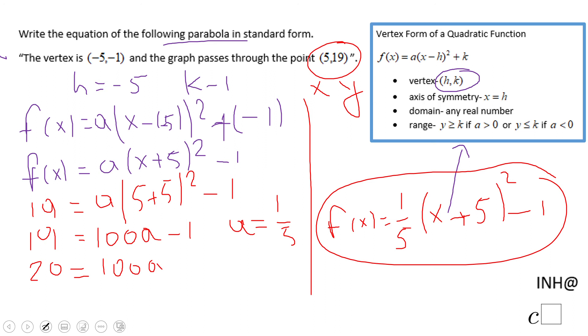You can also see here the graph of this equation. You notice the vertex at (-5, -1) and it goes through (5, 19).